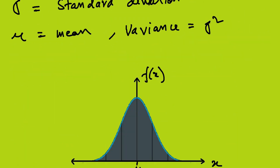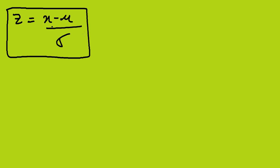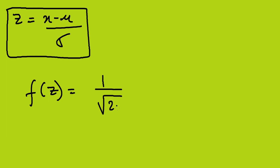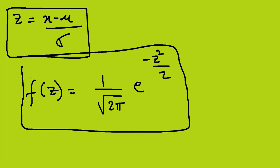To convert this distribution into standard normal distribution, we take the variable z = (x − μ) / σ. Substituting this, we get f(z) = (1 / √(2π)) × e^(−z² / 2). This is the probability distribution function for standard normal distribution.